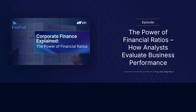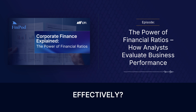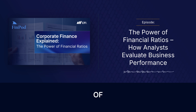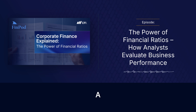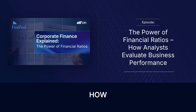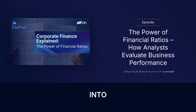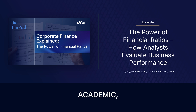Second, profitability ratios — the big one. Is all that growth actually turning into real returns? Is the business making money effectively? Third, leverage ratios — this flags the level of balance sheet risk hiding underneath those returns. Are the profits fueled by a mountain of debt? And finally, efficiency ratios, which show how well the company turns its inputs — inventory, assets — into actual output, into revenue.